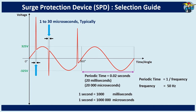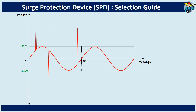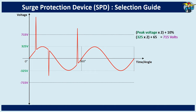Most of these surges originate through lightning strikes or electrical switching of inductive loads. When continuous operation of an electronic system is required, it is essential to limit these peaks below the impulse immunity of the equipment. If we don't know the impulse voltage it withstands, simply take twice of the maximum voltage plus another 10%, as the safe value. So, 715 volts is the safe range for electronic equipment here, and spikes within this range can be considered as harmless to critical equipment.